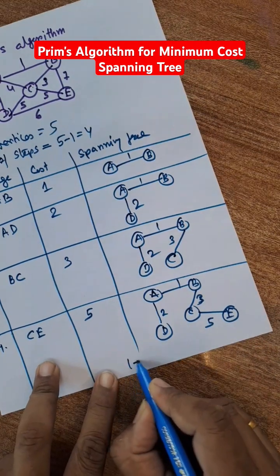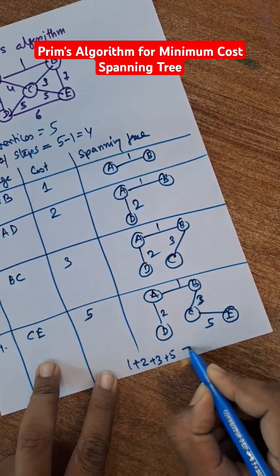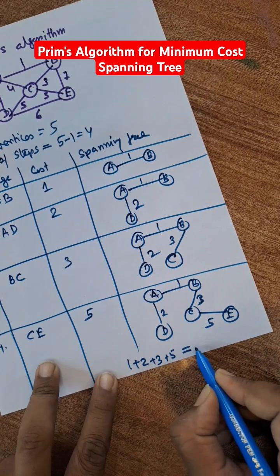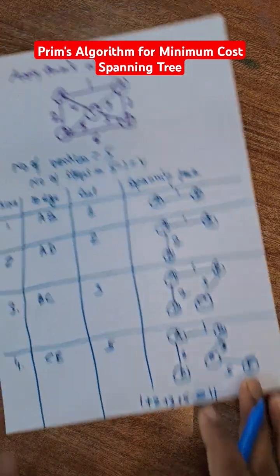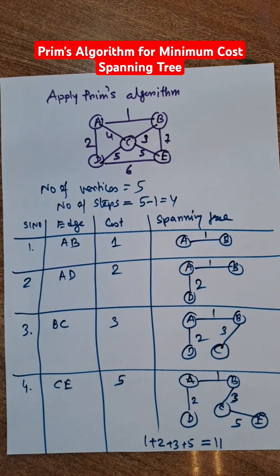Total cost is 1 plus 2 plus 3 plus 5, that is equal to 11. Thank you very much for watching this video. Share and subscribe. Thank you.